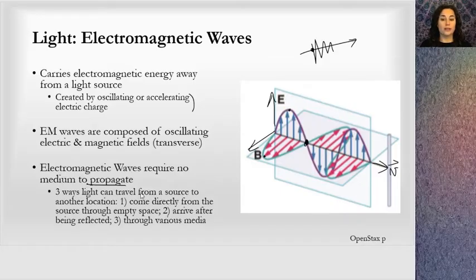Three ways light can travel from a source to another location. It can come directly from the source. It can arrive after being reflected, and we're going to study reflection in a few lessons. And it can arrive through various media. For example, it goes through glass before it gets to you. And so we're also going to study that effect in a few lessons.